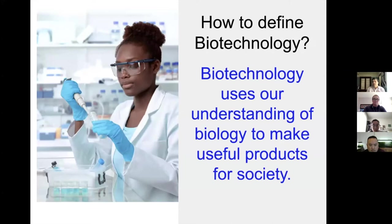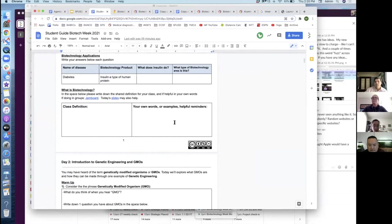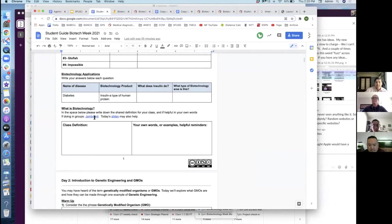Here's our operating definition: biotechnology uses our understanding of biology to make useful products for society. Certainly involves chemistry, biochemistry, all that other stuff, but let's just shout it out to the biology folks for right now. You can just sort of give that to them and have them fill that out in their student guide, have them use their own words to describe it.